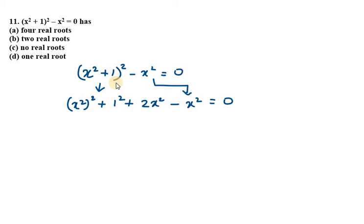Now we get x square whole square plus 1 squared. 1 squared is 1 only, and 2x square minus x square. 2x square minus x square is x square. Now what we will do is simplify this equation and let x square as y.